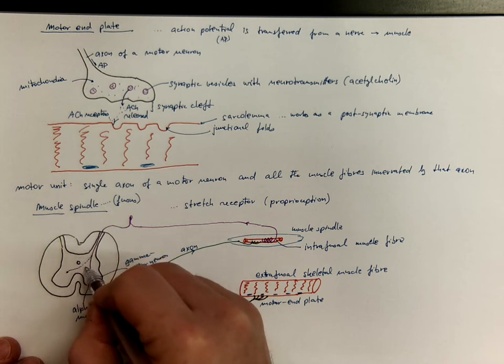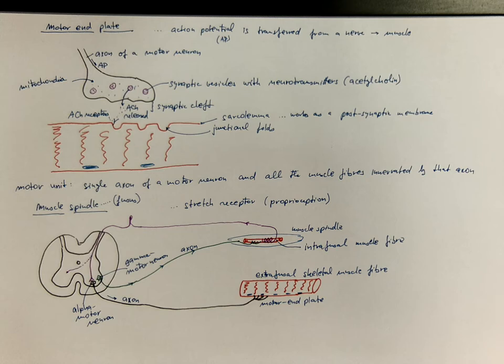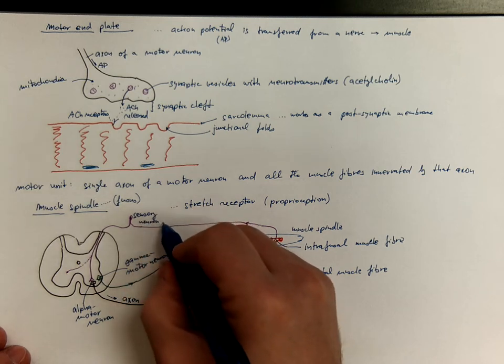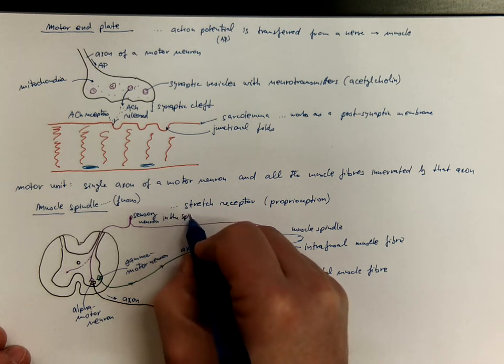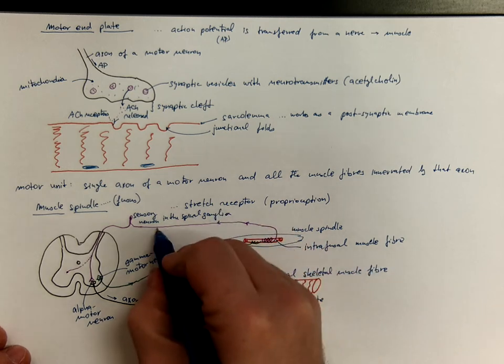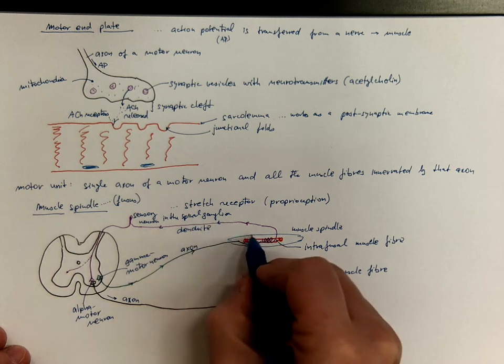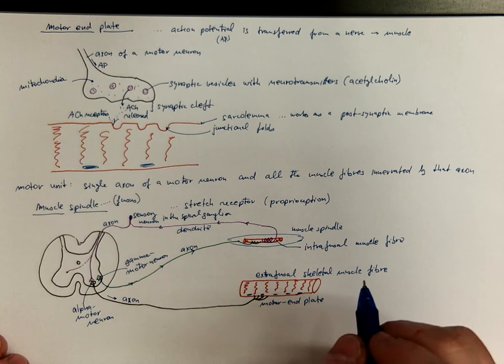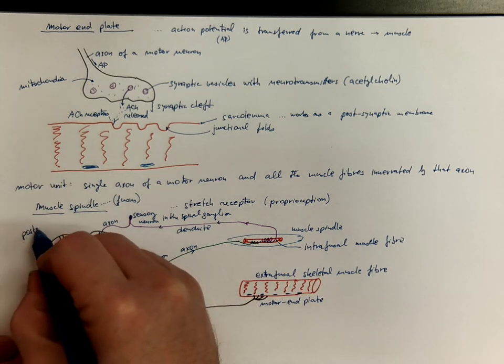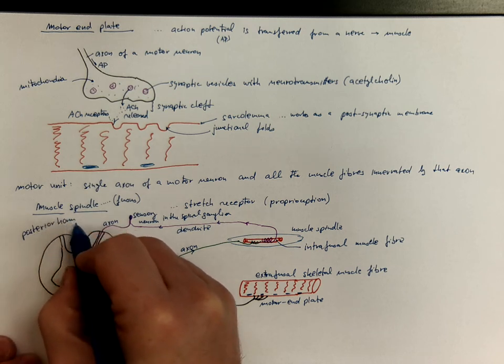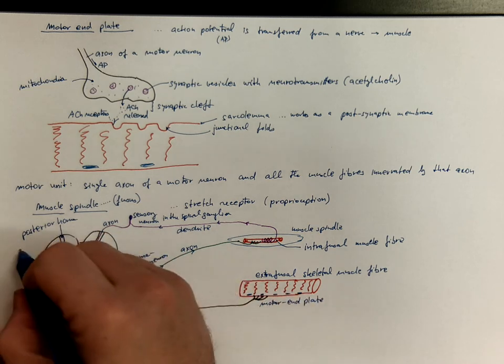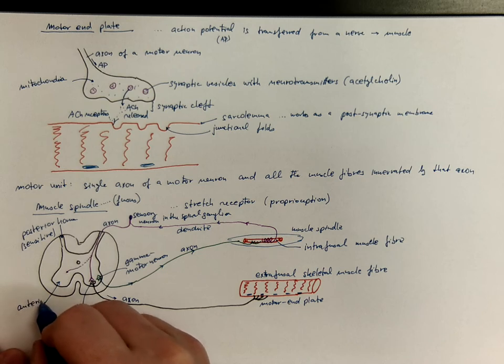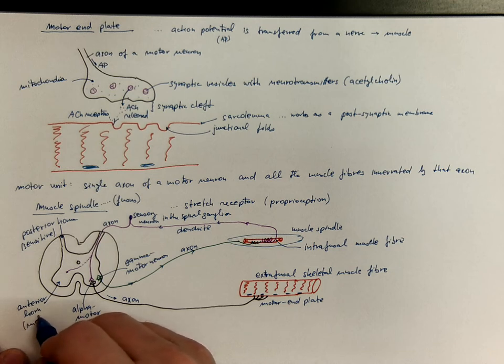They can synapse to the other side or to different segments. So this is a sensory neuron within the spinal ganglion. And this is its dendrite that carries information from the periphery towards the nerve cell body. And this is the axon that enters the dorsal horns. Because we have the posterior or dorsal horns of the spinal gray matter that are sensitive, and these are the anterior horns that are motor horns.